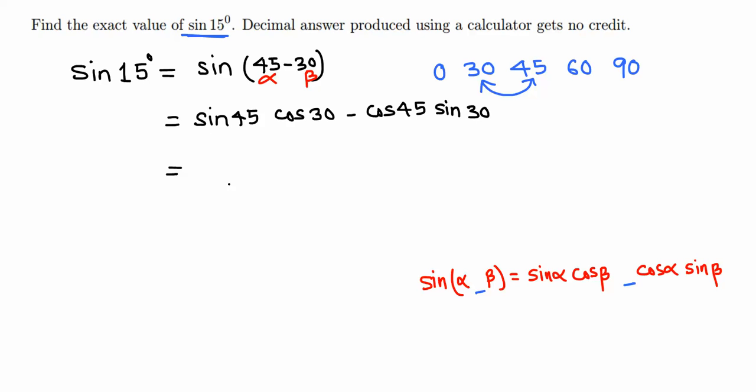In any case, sine 45 is root 2 over 2 or 1 over root 2, times cosine 30 is root 3 over 2, minus cosine 45 is root 2 over 2 or 1 over root 2...